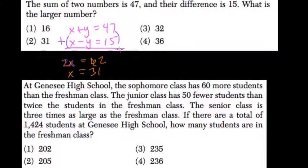So what's the larger number they want to know? Well, if we add these two, you have 47. That means 31 plus y equals 47, and y equals 47 minus 31, which is 16. So the larger number is 31.